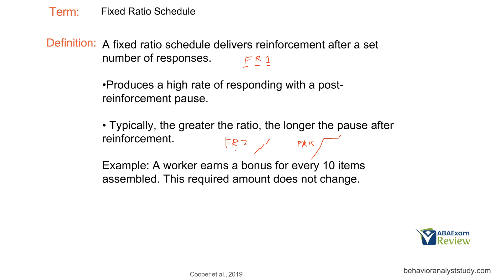When choosing how many responses you're going to require to receive reinforcement, keep in mind you might have to handle a pause in responding afterwards. For example, a worker earns a bonus for every 10 items assembled and the required amount does not change — that's fixed, based on a number of responses. That would be written as FR10.